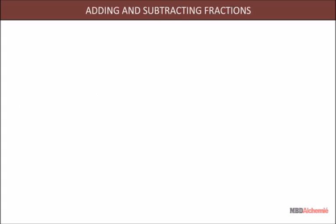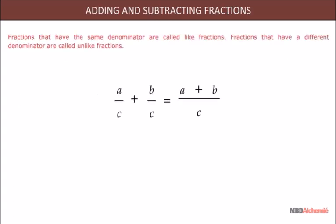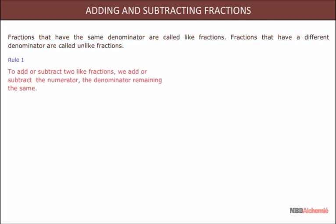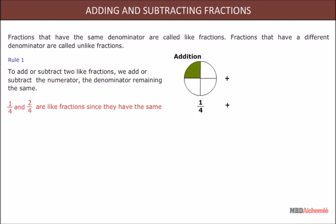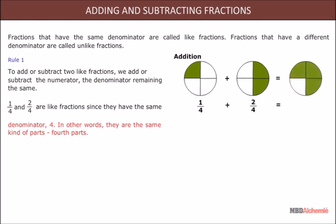Adding and subtracting fractions: fractions that have the same denominator are called like fractions, and fractions that have a different denominator are called unlike fractions. Rule 1: to add or subtract two like fractions, we add or subtract the numerators, keeping the denominator the same. For example, 1/4 and 2/4 are like fractions since they have the same denominator 4 — in other words, they are the same kind of parts, 4th parts.